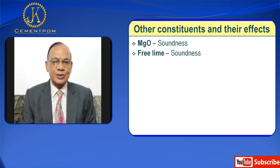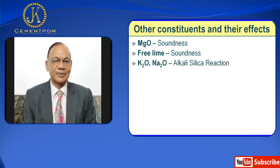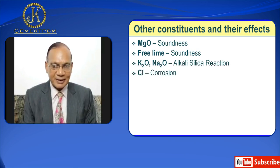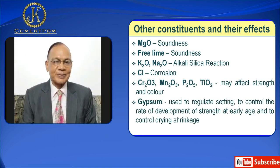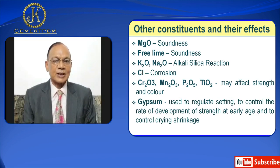In addition to the four main phases of cement, I would like to discuss the role of other constituents of cement. Free lime and MgO are responsible for soundness of cement. Alkalis are responsible for alkali silica reaction. Chloride is responsible for corrosion in concrete. Fe2O3 may affect strength and color. Gypsum is used to regulate setting, to control the rate of development of strength at an early age and to control drying shrinkage.